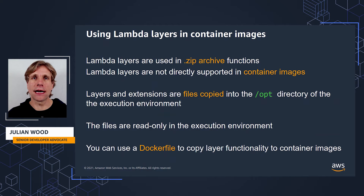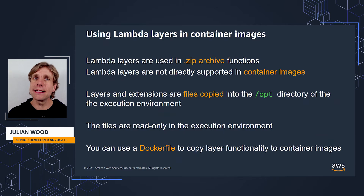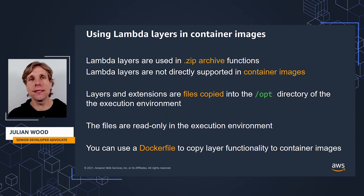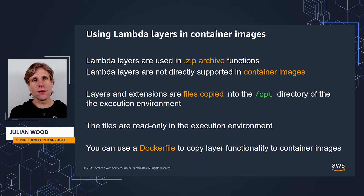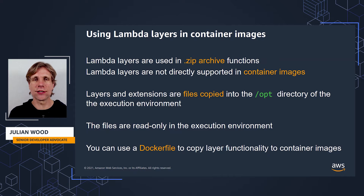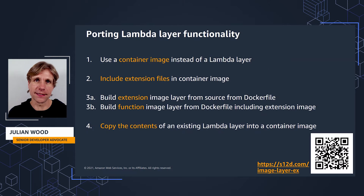Extensions are deployed to zip archive functions as Lambda layers. But Lambda layers are not directly supported in container image functions, as images are created at build time rather than run time. Remember that layers and extensions in zip archive functions are just files copied into the execution environment under /opt and made available to functions. So you can use the Dockerfile to add the functionality of layers and extensions to your function container images just by copying files.